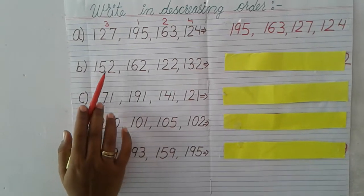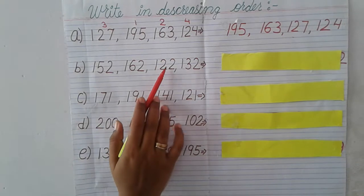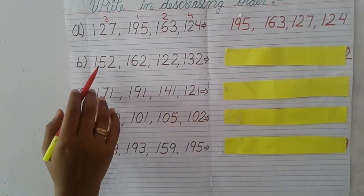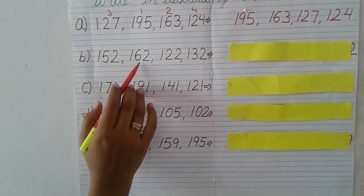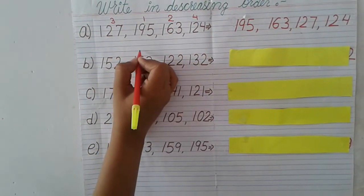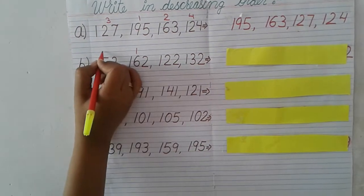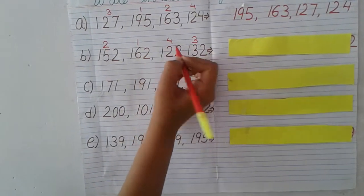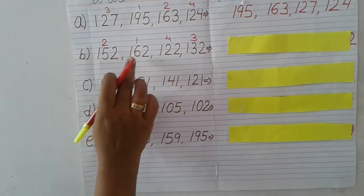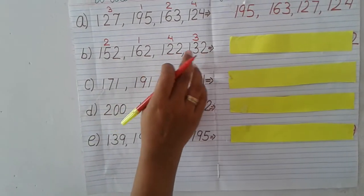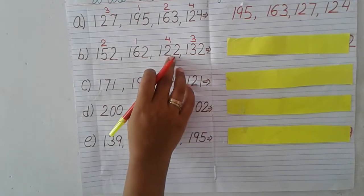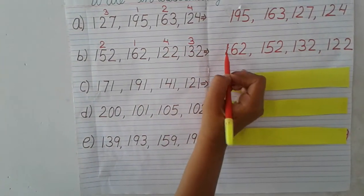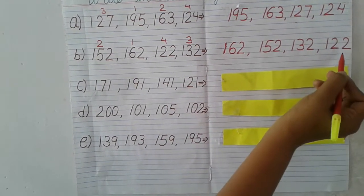Now question B: 152, 162, 122, 132. The hundreds place is all the same, so we go to the tens place: 5, 6, 2, 3. Which is the biggest? 6, so 162 is first. Then 5, so 152 is second. Then 3, so 132 is third. Last is 122. The answer is: 162, 152, 132, 122.